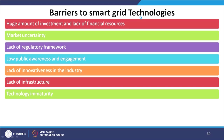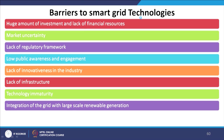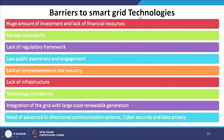Additional barriers include lack of innovativeness in the industry, lack of infrastructure, technology immaturity, integration of the grid with large-scale renewable generation — which is a major challenge since existing systems were not designed to incorporate excess renewable energy — need for advanced bi-directional communication systems, and cyber security and data privacy concerns. We end lecture 2 here, and in the next class we will get into the details of smart grid modeling and technical aspects. Thank you.